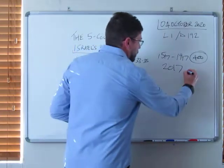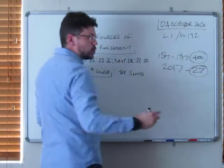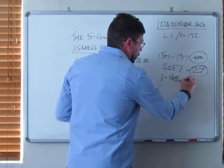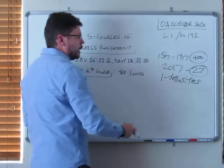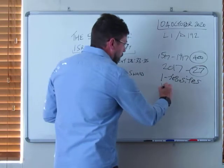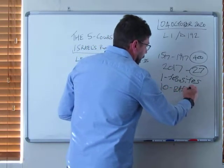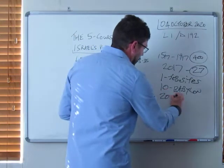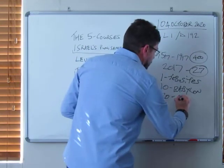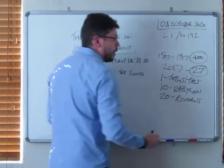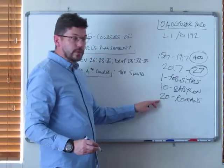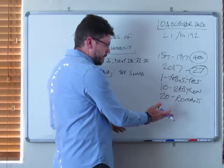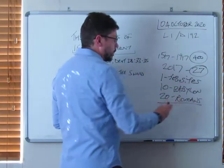It's been destroyed 27 times in total. Just of interest, the first time was when David took it from the Jebusites when it went under battle. The tenth time was when the Babylonians came under Nebuchadnezzar and destroyed the temple. The twentieth time, it was destroyed by the Romans. And through history, since AD 70 to present, it's been destroyed another seven times. So in total, Jerusalem has been destroyed 27 times.